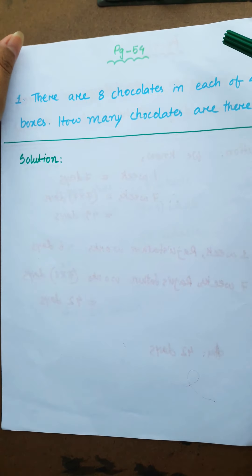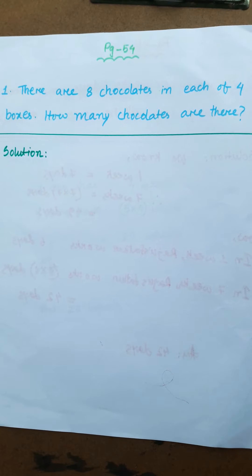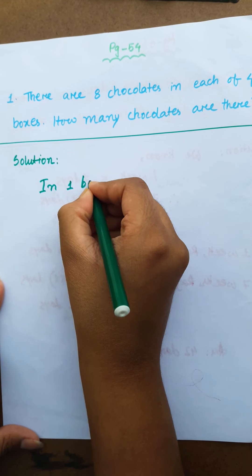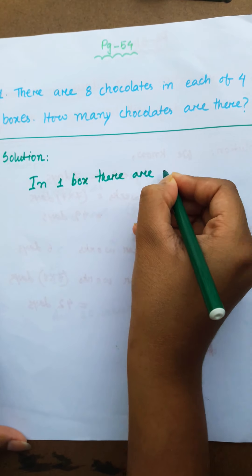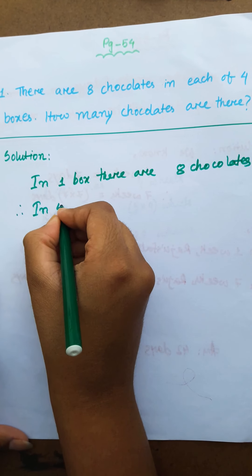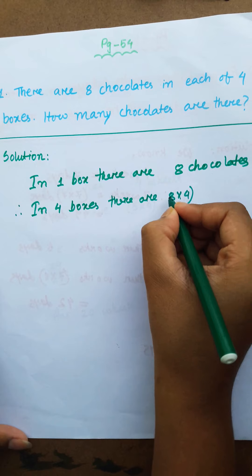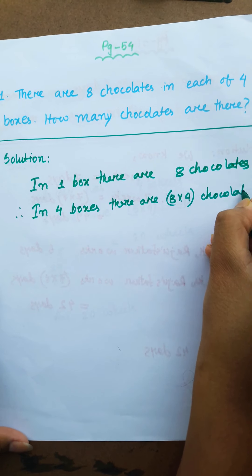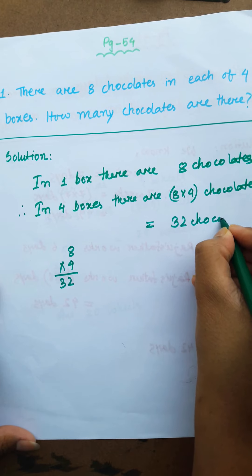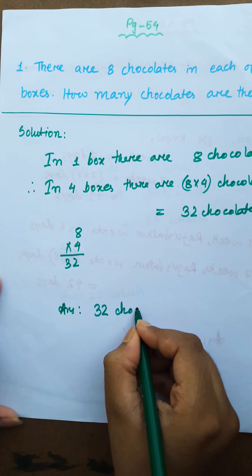Now the last math, page number 54, question 1: There are 8 chocolates in each of 4 boxes. How many chocolates are there in total? In 1 box there are 8 chocolates. Therefore, in 4 boxes there are 8 into 4 chocolates. 8 into 4 is 32. So the answer is 32 chocolates.